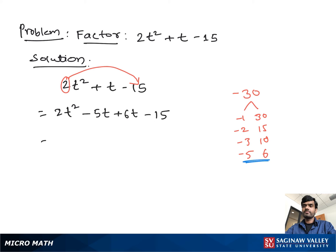Now from this group we take t as a common. We have t times (2t - 5). Now from this we take +3 as a common.